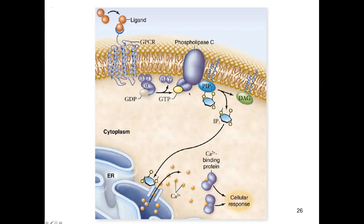Now what about diacylglycerol? We haven't talked about it yet. Diacylglycerol can diffuse laterally within the membrane and interact with a downstream protein called protein kinase C. A kinase is an enzyme that phosphorylates other target proteins, and protein kinase C is a master phosphorylator protein.